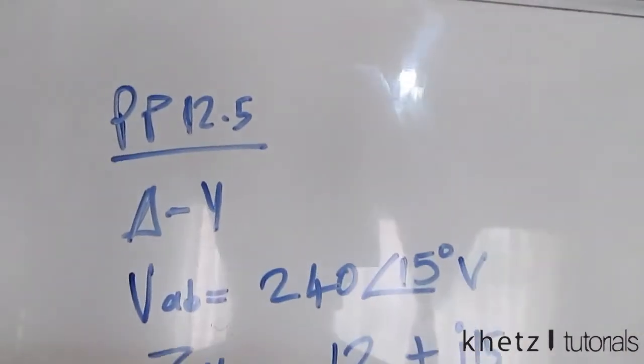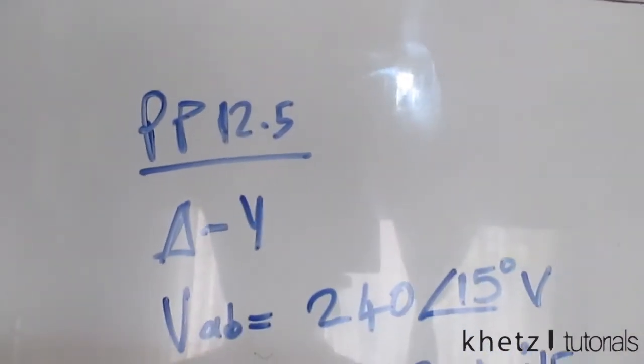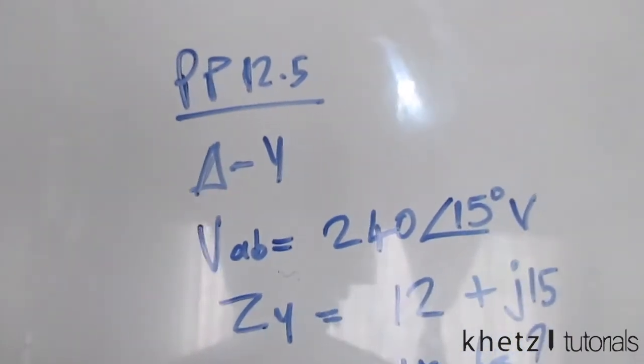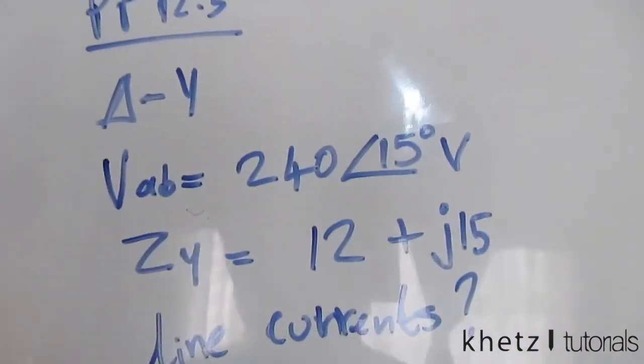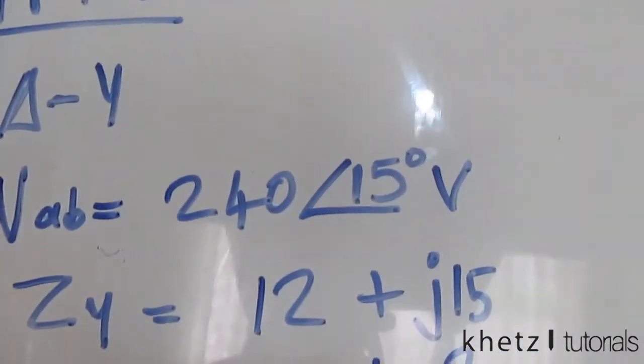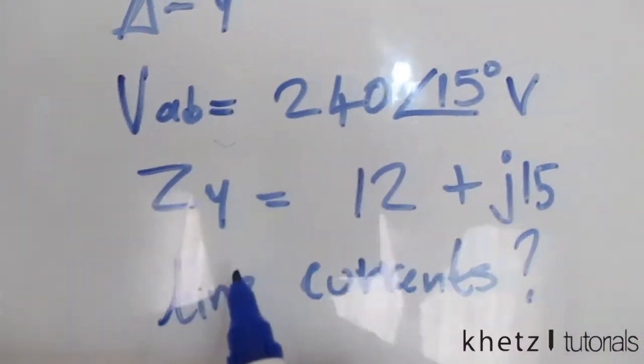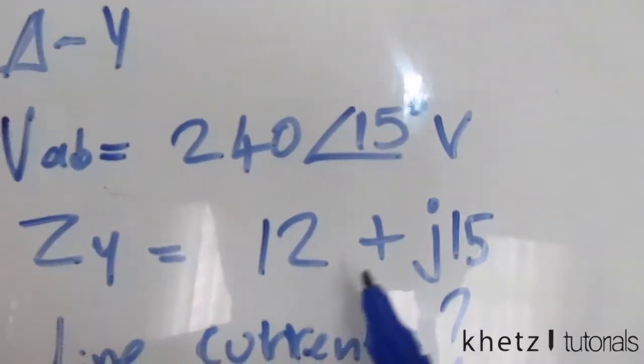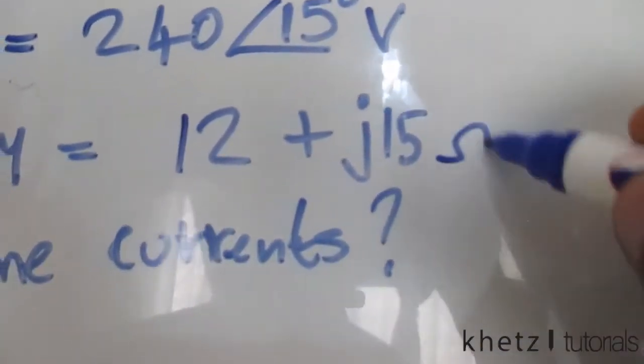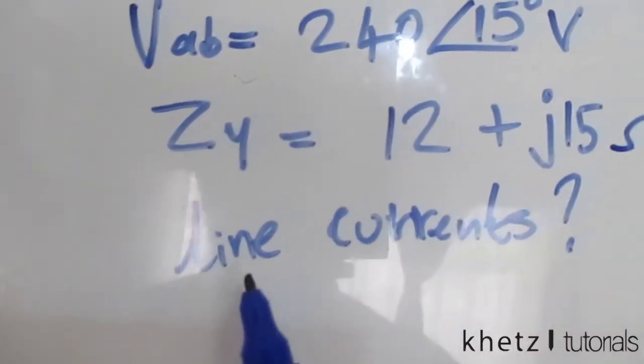Welcome to CAD Tutorials. In this video I'll be doing practice problem 12.5. We're given a delta-wye connection and we're told that VAB is 240 with an angle of 15 degrees, and the impedance per phase, or Zy, is 12 plus j15 ohms. We're asked to find the line currents.